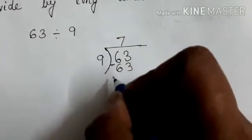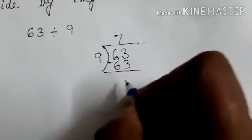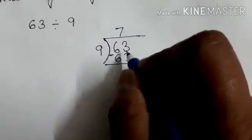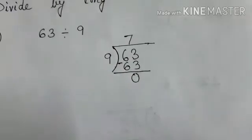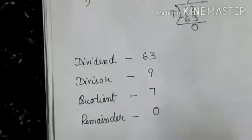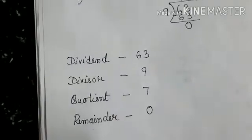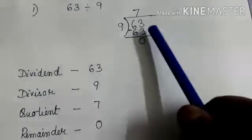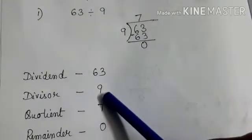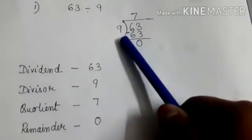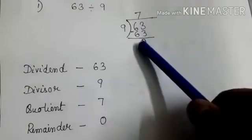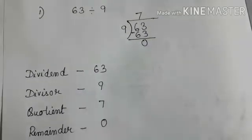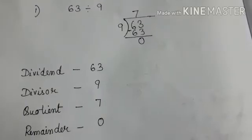And we have to do subtraction. And when we subtract we get the remainder. Here 63 minus 63 is 0. And then we have to write the dividend. 63 divisor 9. Quotient is 7 and remainder is 0. So in this way we have to solve the long division.